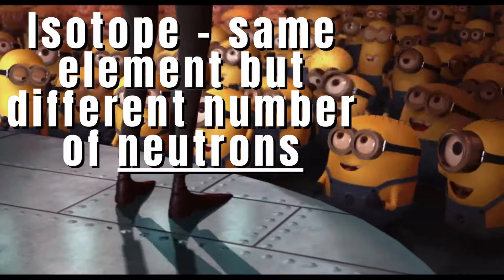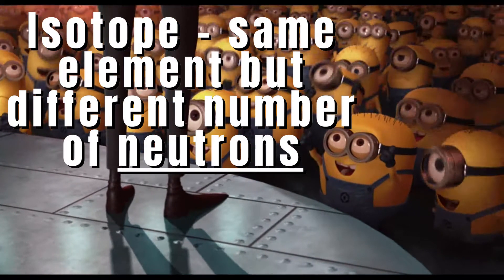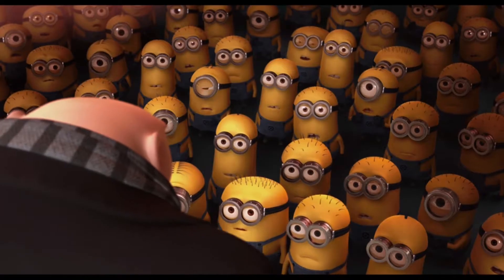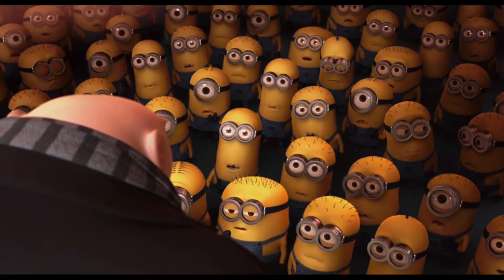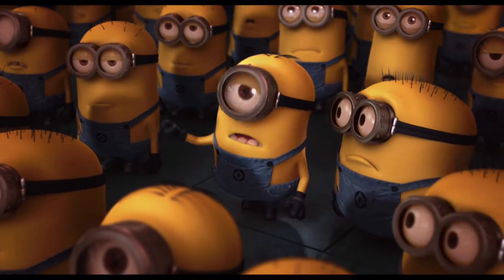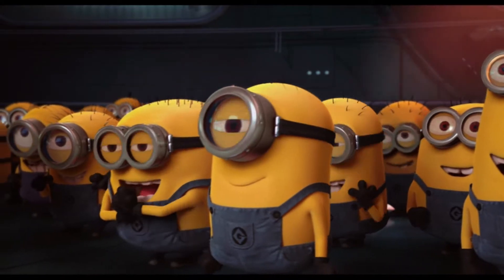Isotopes are atoms of the same element but having a different number of neutrons, and as a consequence, different mass numbers. Minions are a great analogy for isotopes. They are the same but different. Isotopes are the same element but different.